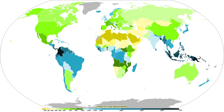Moisture that is lifted or forced to rise over a layer of sub-freezing air at the surface may be condensed into clouds and rain. This process is typically active when freezing rain occurs. A stationary front is often present near the area of freezing rain and serves as the focus for forcing and rising air. Provided necessary and sufficient atmospheric moisture content, the moisture within the rising air will condense into clouds, namely stratus and cumulonimbus.